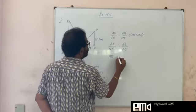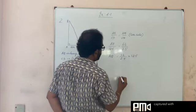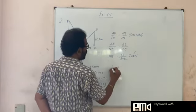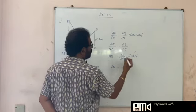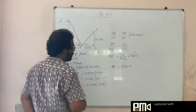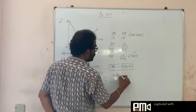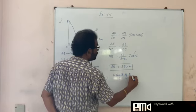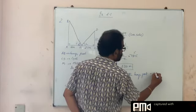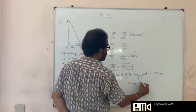So AB is equal to, we take this 1.25 to the other side, so 6 by 2.5 into 1.25. This 2.5 and 1.25 you can cancel 5 times. So AB is equal to 6 into 5, what is 6 into 5? 30. Therefore, height of the lamppost is 3.30 meters.